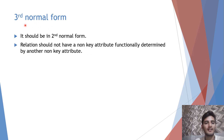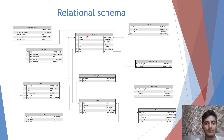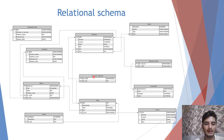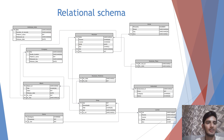For a relation to be in third normal form, it should be in second normal form and it should not have any non-key attribute which is functionally determined by another non-key attribute. Looking at our relational schema, there is no such non-key attribute determining another non-key attribute. So our schema is in third normal form. That's it — thank you.